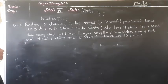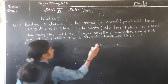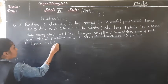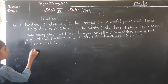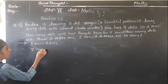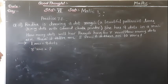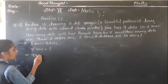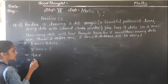Question number 12. Radha is drawing her dot rangoli, a beautiful pattern of lines joining dots with color chalk powder. She has 9 dots in a row. What is asked? How many dots will her rangoli have for R rows? For R rows, we multiply 9 by R. So the rule is 9R.